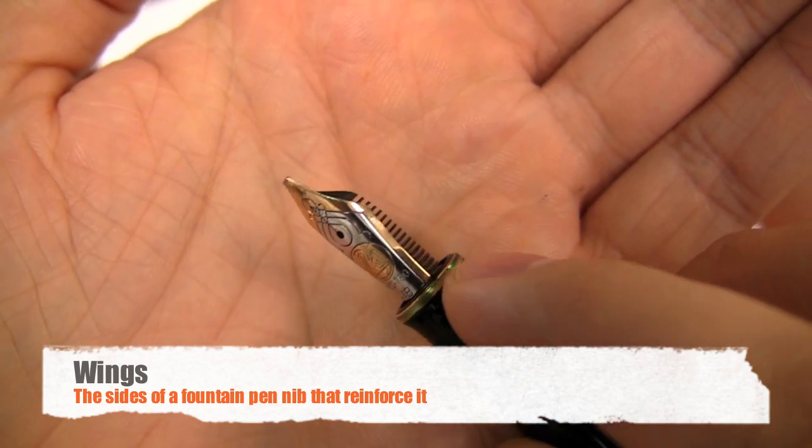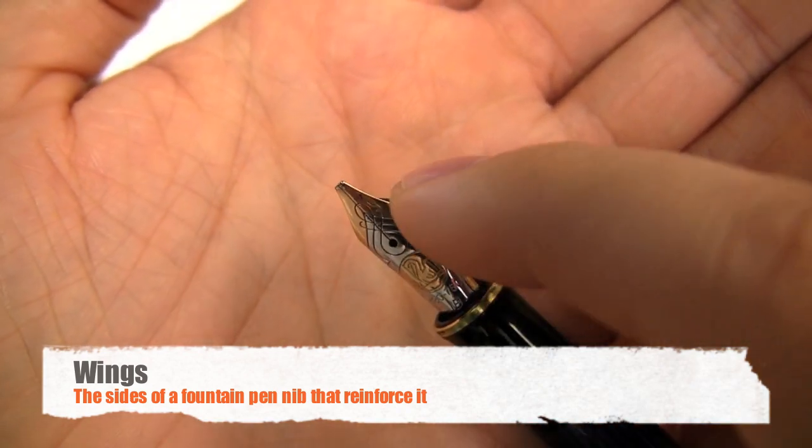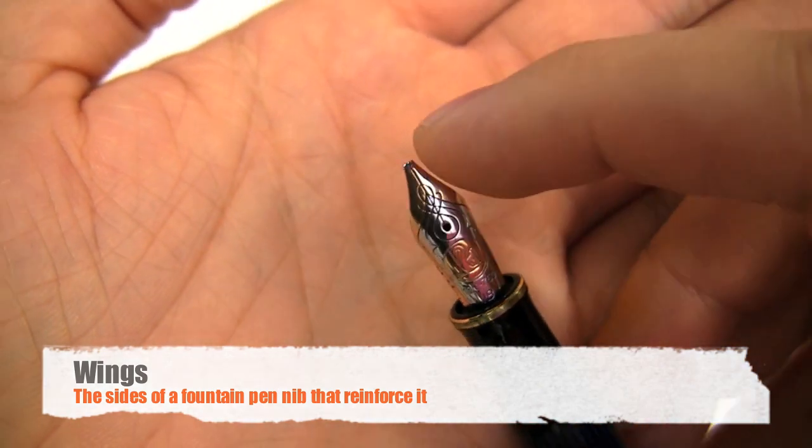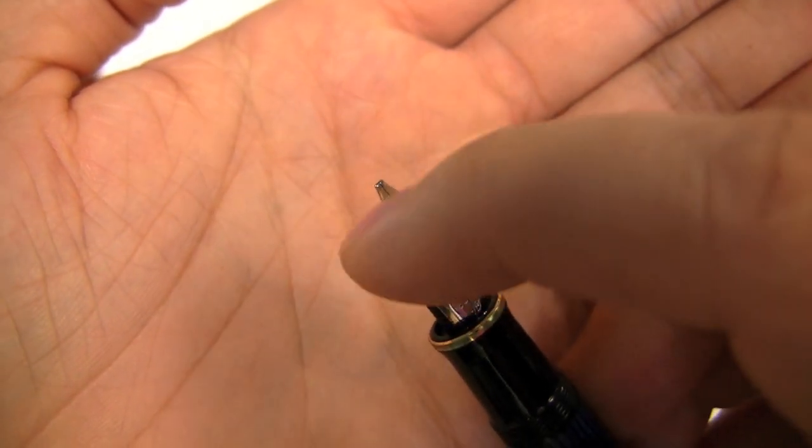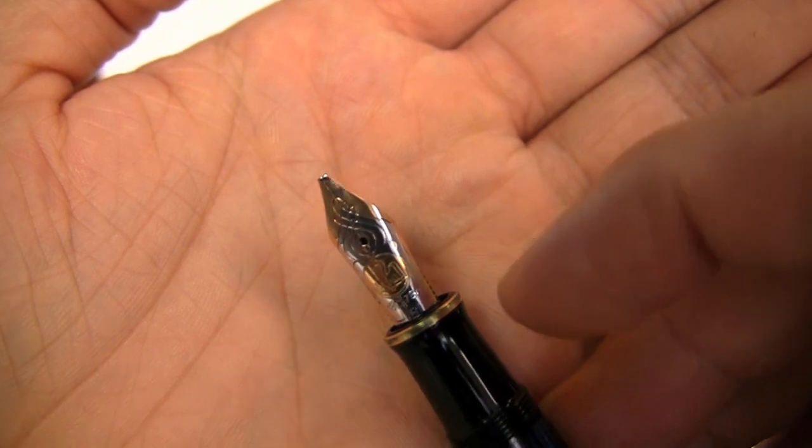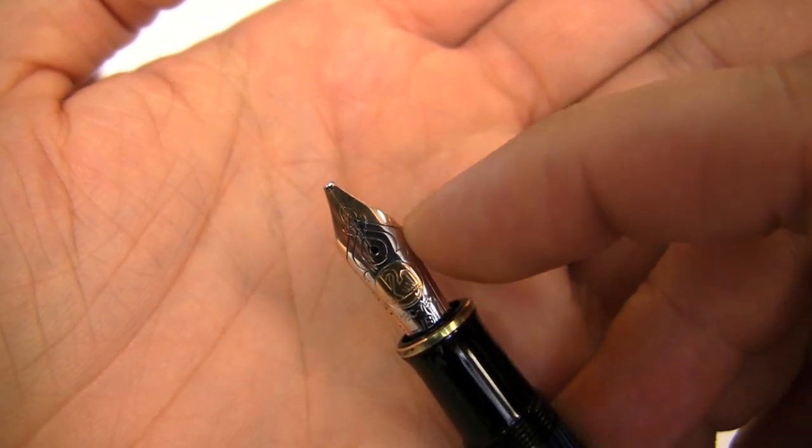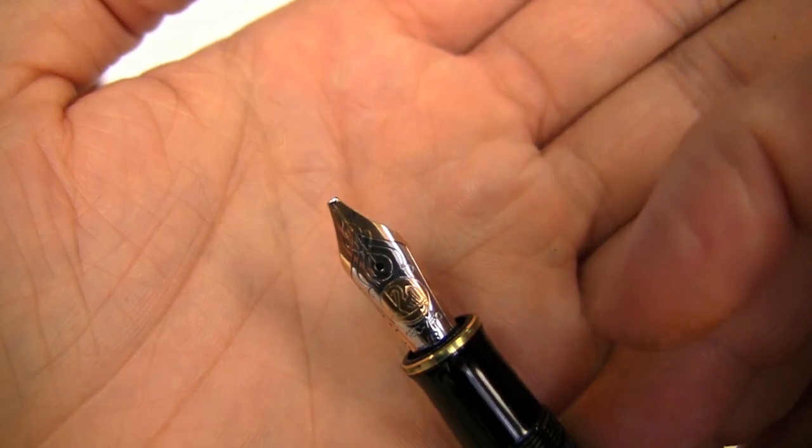The wings of a fountain pen are these parts here, well you can kind of guess why they're called wings, because they come out and then go back. It's very fitting that I just happen to be using a pelican pen to demonstrate the wings. But whenever we're talking about the wings, that's what we're talking about.